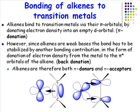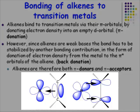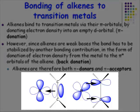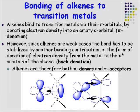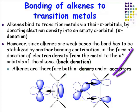If an alkene ligand is a donor and an acceptor, we need to work out which orbitals are involved in donation and which are involved in accepting. The interesting orbitals on an alkene ligand are the pi orbital and the pi star orbital.